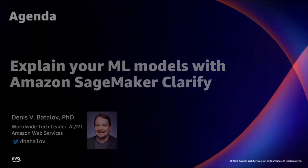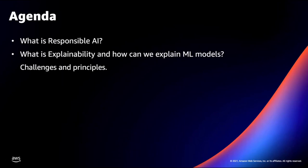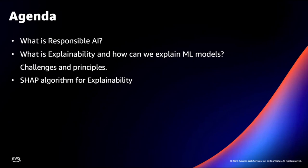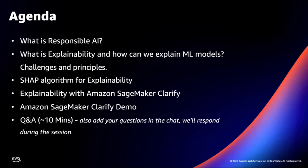Let me start with a quick agenda for today. From responsible AI, we'll move on to explainability, the actual challenges and the principles behind that. I will give you an explanation — pun intended — of SHAP, which is the algorithm underpinning the explainability functionality in Amazon SageMaker Clarify. Of course, we will do a demo and, time permitting, we'll have time for your questions, so please drop them in the chat during the session.